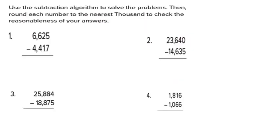Now use the subtraction algorithm — that's the same as normal subtraction — to solve the problems. Then round each number to the nearest thousand to check the reasonableness of the answer — to see if the answer is close (reasonable) or far away (not reasonable).